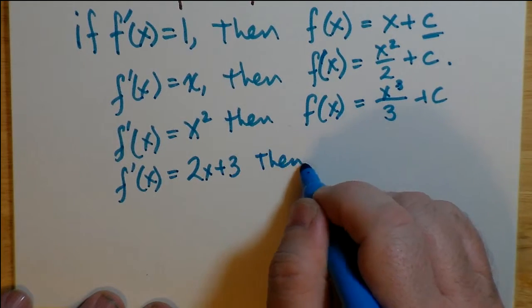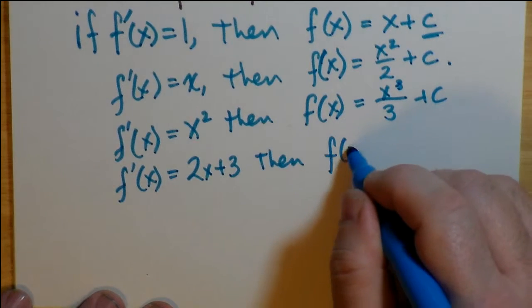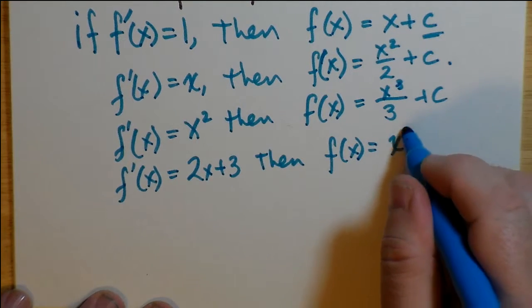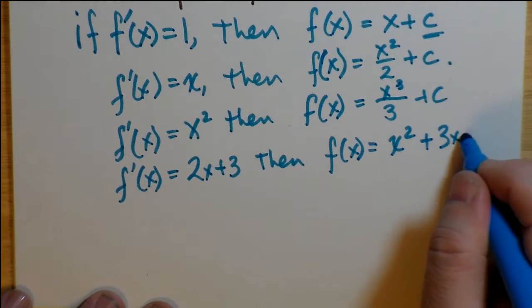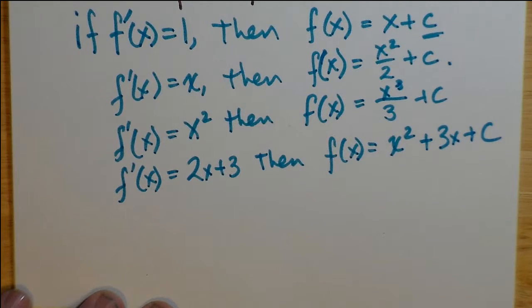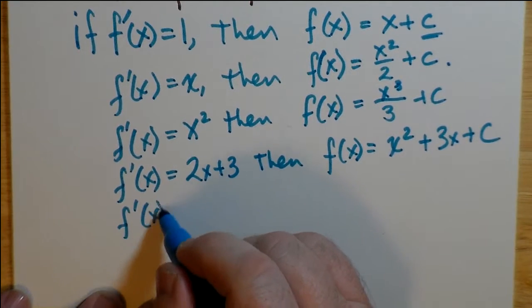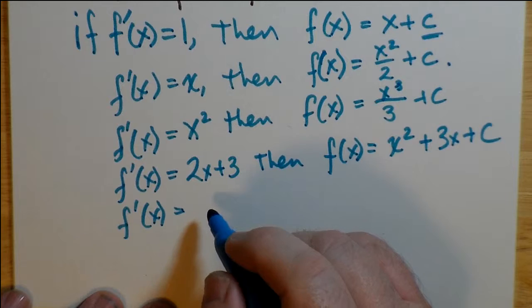But moving on, if it was a linear function with a constant added to it, then its anti-derivative would be x squared, because this time x squared, you'll end up with 2x squared over 2. The 2's canceling, you get x squared plus 3x plus c.